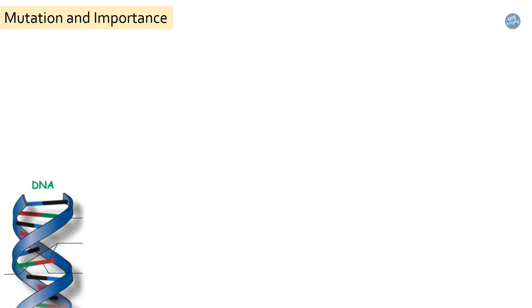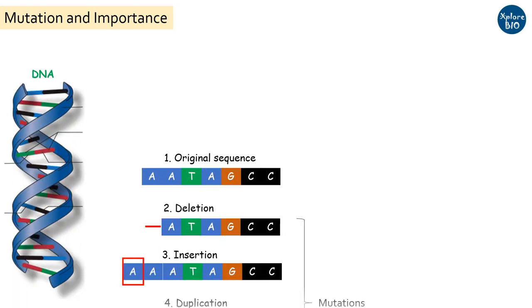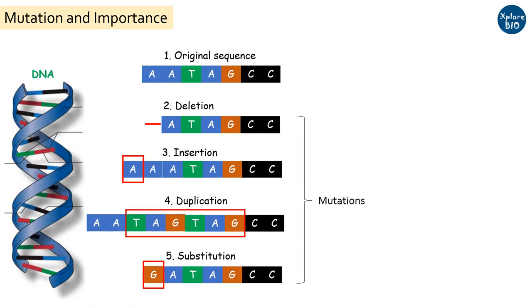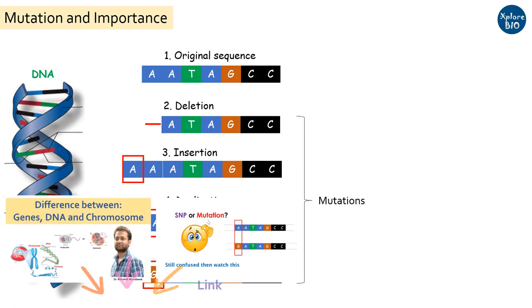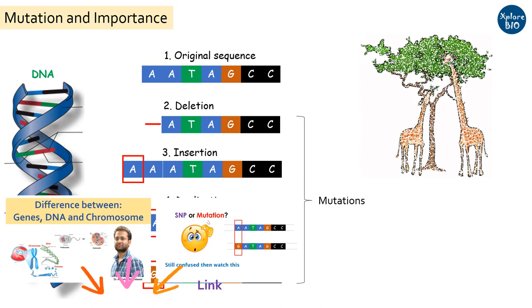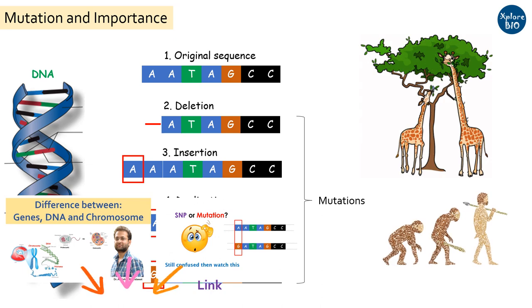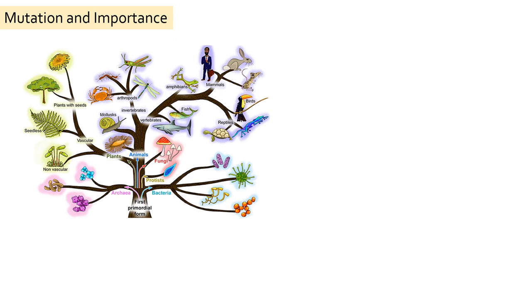First, it is essential to know what is mutation and why it is important. Mutation refers to a change in the genetic composition of an organism. It is the mutation that drives adaptation and evolution of any species. Mutation occurs naturally in all organisms, from plants and animals to bacteria and viruses.